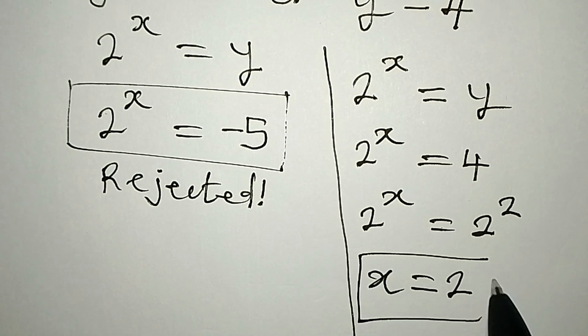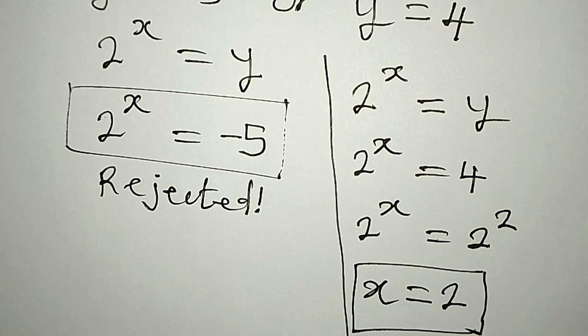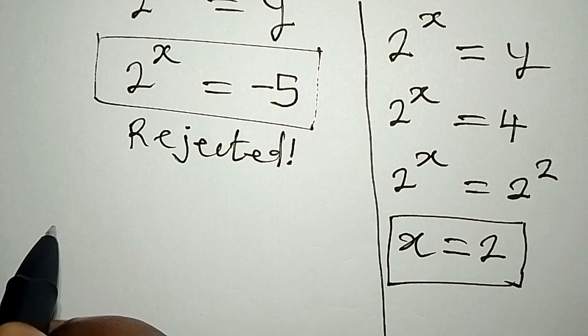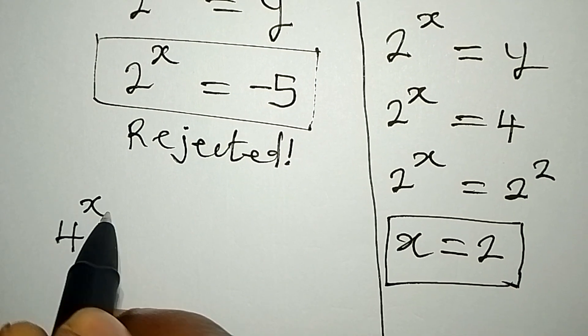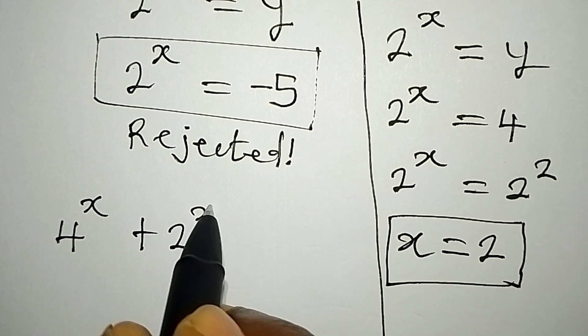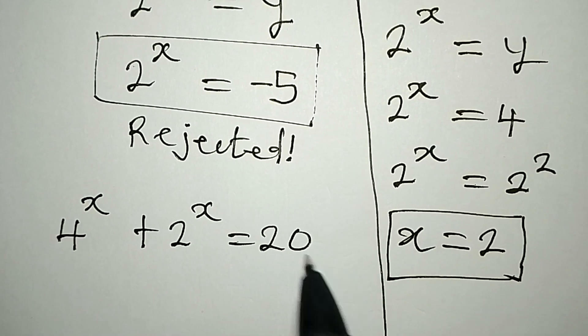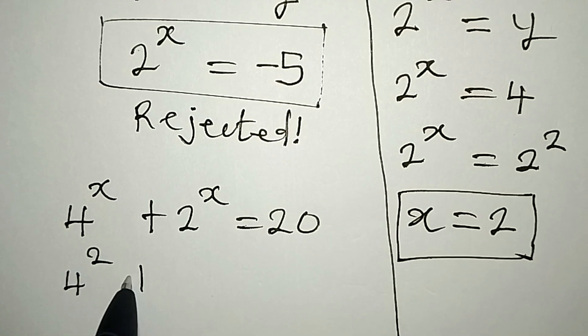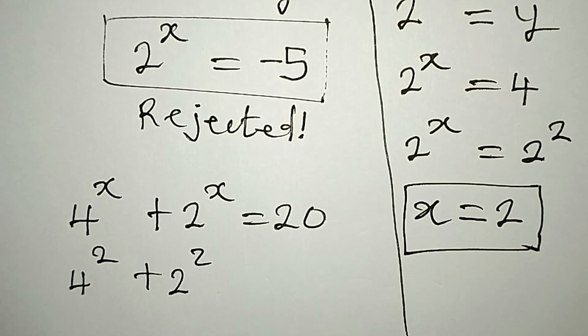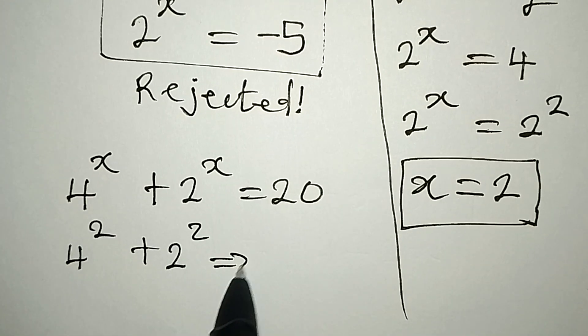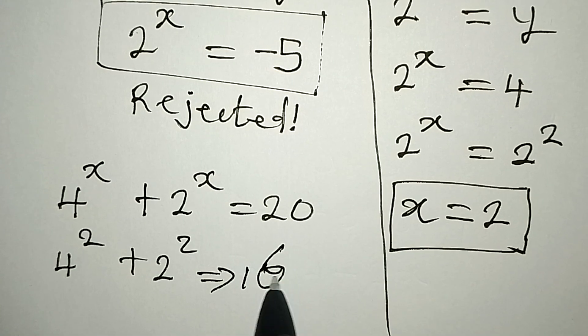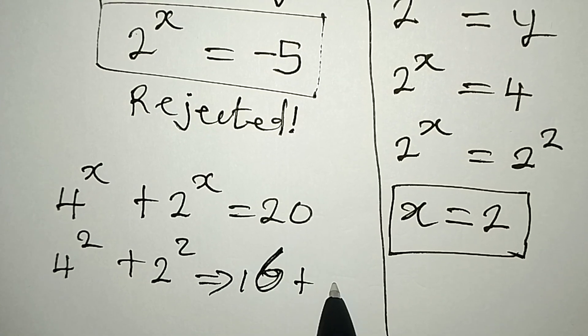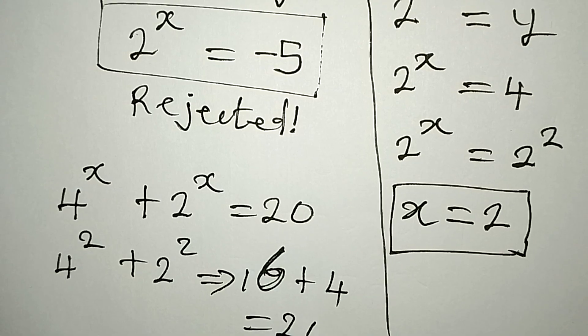And you can put it back in and confirm. We had 4 to the power of x plus 2 to the power of x equals 20. This means that we're having 4 to the power of 2 plus 2 to the power of 2. This implies 16 plus 4, and it's giving us 20.